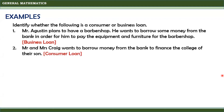For the second one, Mr. and Mrs. Craig want to borrow money from the bank to finance the college education of their son. Since the money will be used for the education of their son, this is an example of a consumer loan.